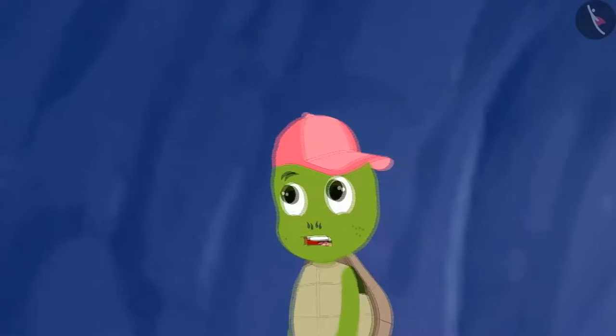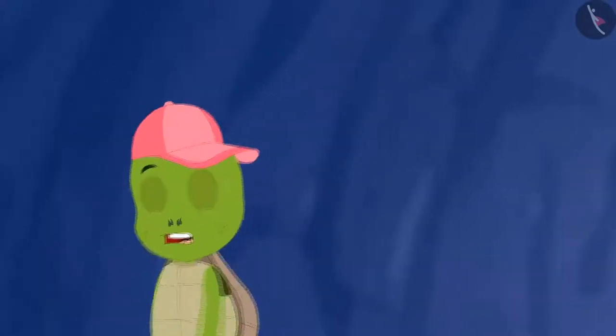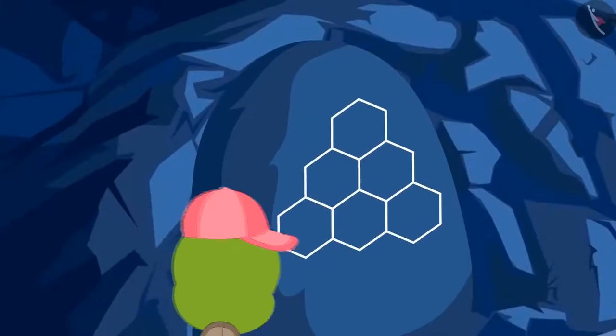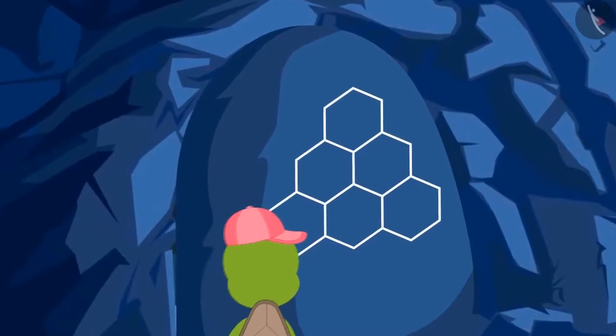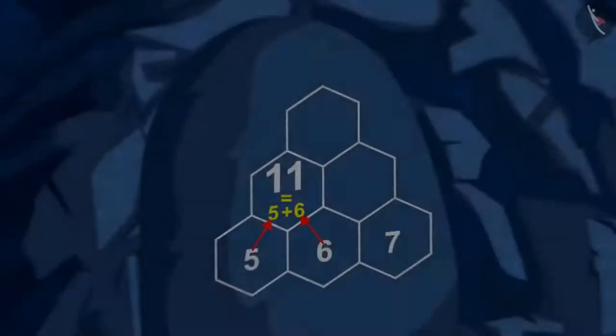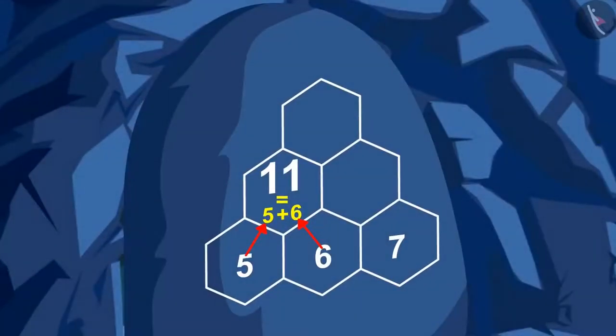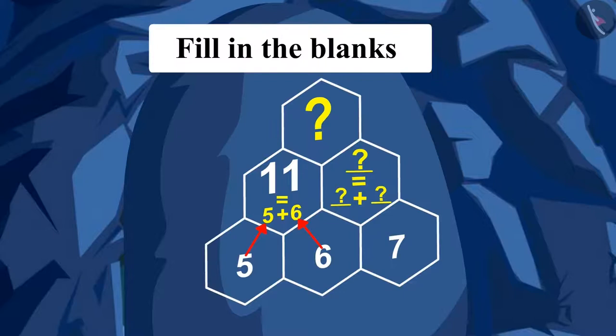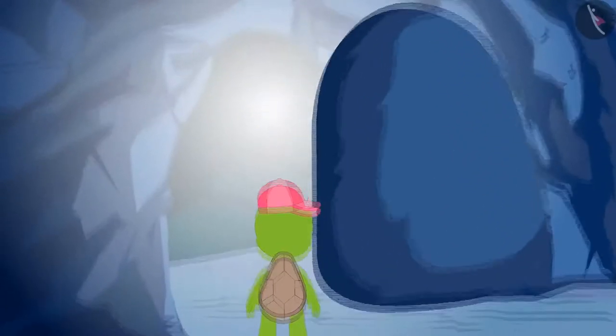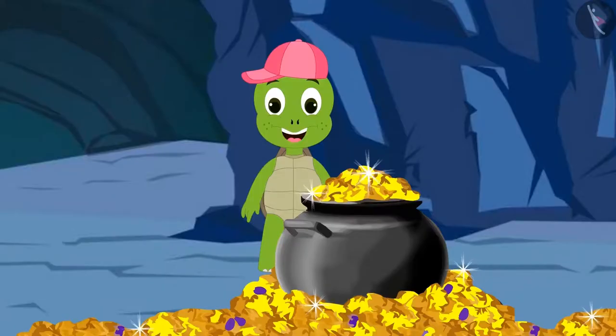Tufan started moving faster to reach the third door. At last, Tufan reached the third door. At the third and last door, Tufan saw this puzzle. Tufan has found the right answer to the puzzle. Now, you too, try to find the answer to this puzzle. The third door opened and Tufan found a lot of treasure.